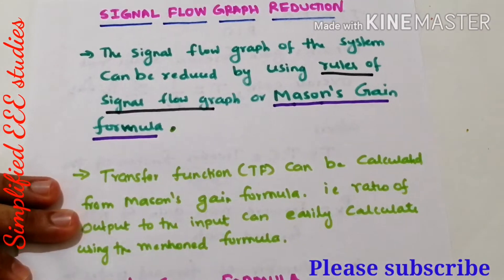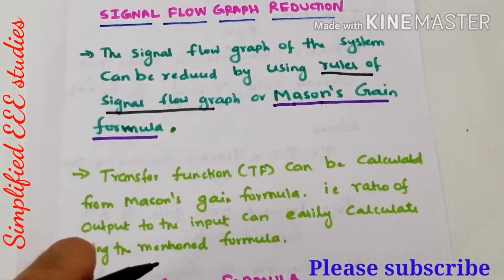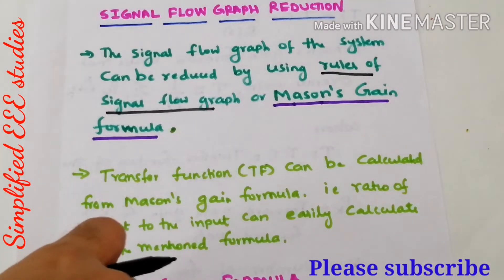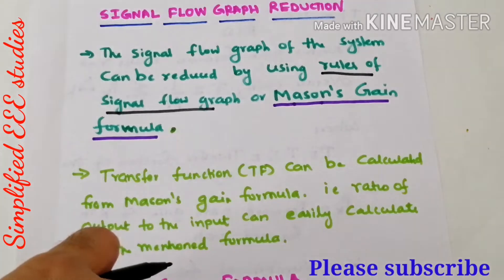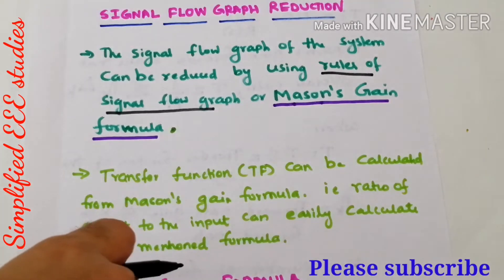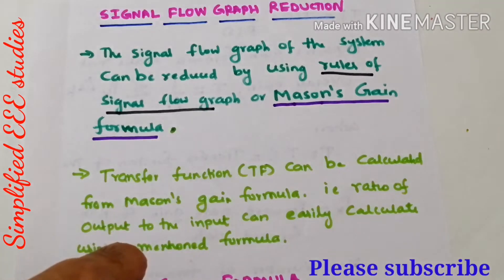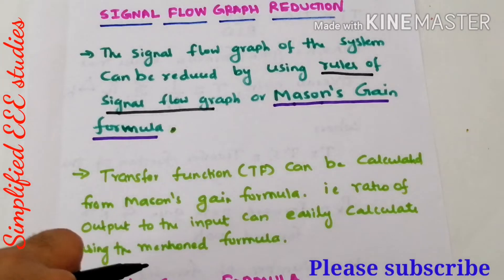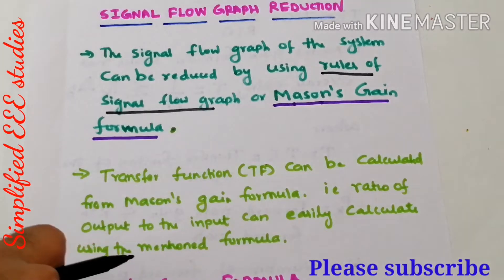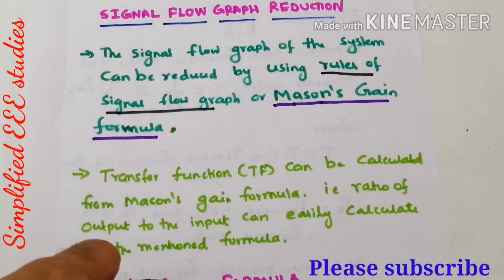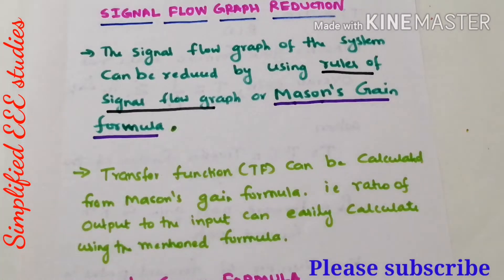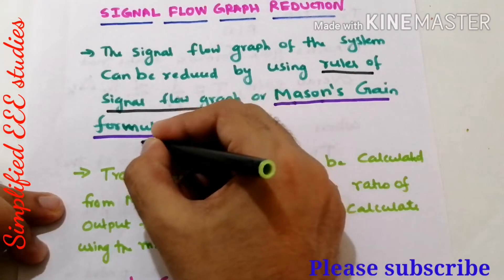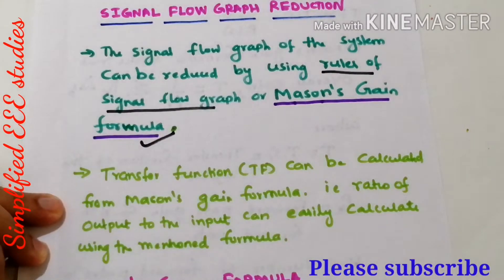If you depend on different signal flow graph algebra methods, the main problem is the procedure becomes too complex and too lengthy. So depending on signal flow graph algebra it is very difficult to find out the signal flow graph reduction. At this point we can depend on the popular formula, namely Mason's gain formula.